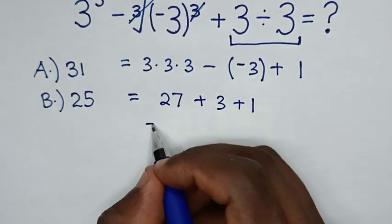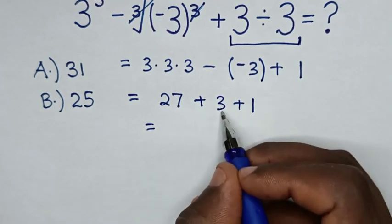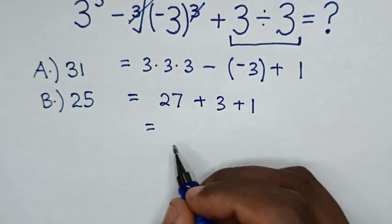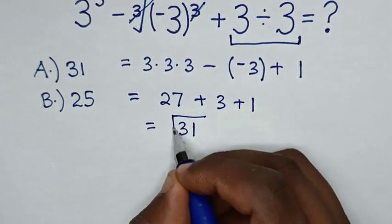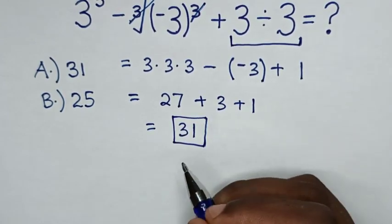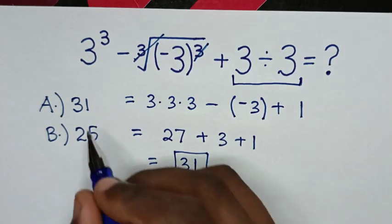Then, it will be equal to 27 plus 3 is 30. 30 plus 1 is 31. So, this is our final answer. Selecting the multiple choice, it is A.